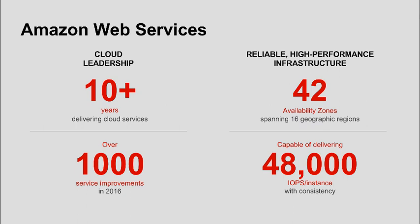In 2011, we released over 80 significant services and features. In 2012, nearly 160. In 2013, 280. In 2014, 516. In 2015, 722. In 2016, we launched more than 1,000 new services and features. As of April 1st, we've launched 236 new features and services in 2017. In 2015, we also launched a new Amazon EBS feature that allows you to dynamically increase capacity, tune performance, and change the type of live volumes with no downtime or performance impact, enabling you to right-size your deployment and adapt to performance changes.